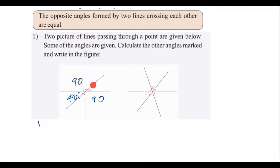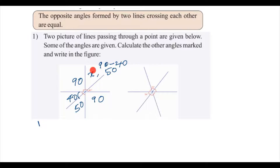We need to find the other angles. The sum of these two angles is 90 degrees, so the unknown angle can be measured. Let the unknown angle be x. So x is equal to 90 minus 40, which equals 50 degrees. Since the wall angle sum is 90, this is 90 minus 40, and it is 50 degrees.